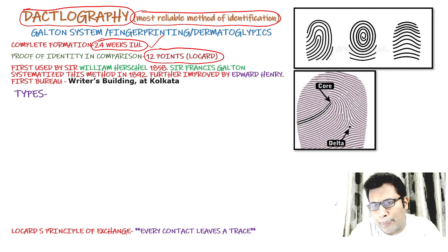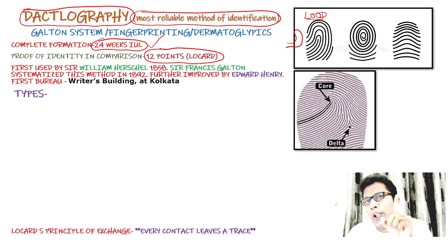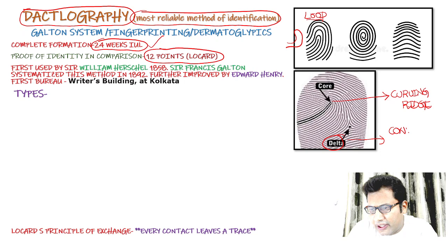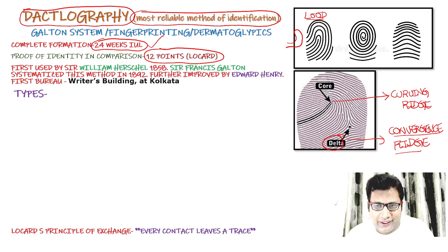Let's identify the different types of fingerprints. The loop — the entry point and exit point are on the same side, either on the ulnar side or on the radial side. It has one core and one delta. The core means it is a curving ridge. The delta means it is a convergence of the ridge, usually from three sides. When there is one core and one delta, it is a loop.